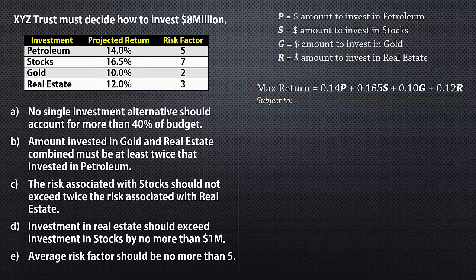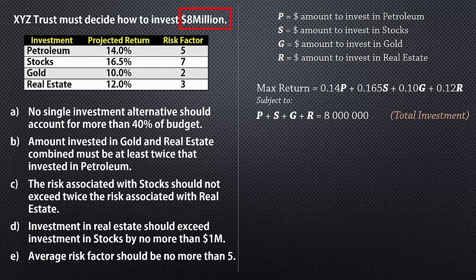For the constraints, let's first write one for the total investment. Since P, S, G and R represent the amount to invest in these alternatives, we can write P plus S plus G plus R equals 8 million. We use equality here because we assume the trust is going to invest the entire 8 million. If the 8 million is a budget that may not be fully exhausted, we could use a less than or equal sign instead.